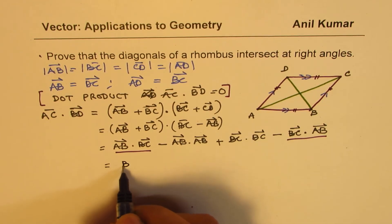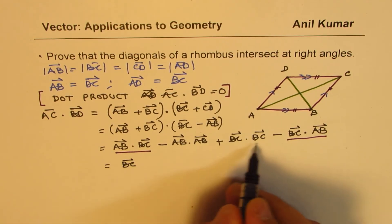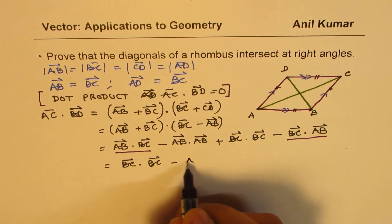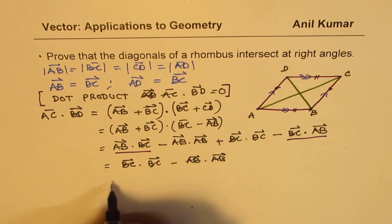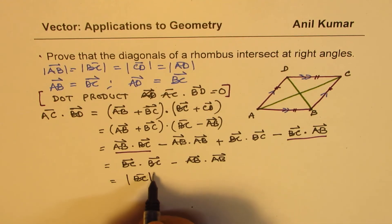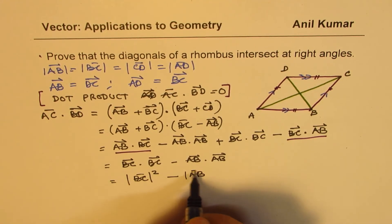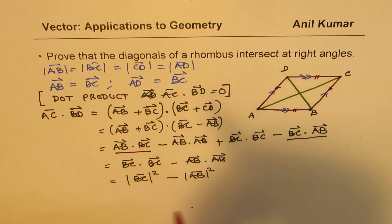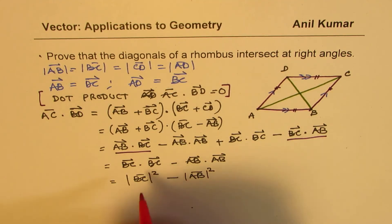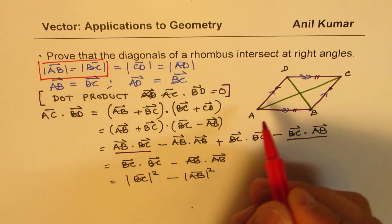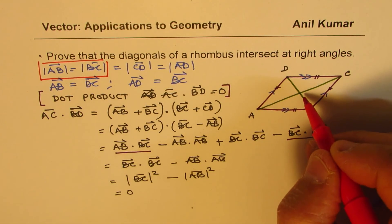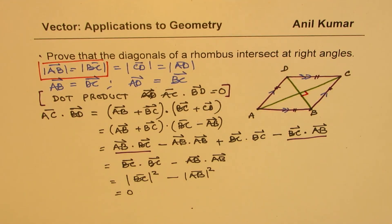We are left with BC·BC minus AB·AB. BC·BC is the square of the magnitude of BC, and AB·AB is the square of the magnitude of AB. So this equals |BC|² − |AB|². Since all sides of a rhombus are equal, these magnitudes are equal, and therefore this expression equals zero. Since the dot product is zero, the diagonals intersect at right angles.